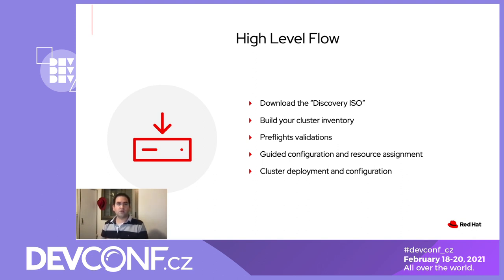Each node that the user wants to be part of the OpenShift cluster needs to boot from that ISO. The agent, which manages the installation locally for a given host, will use a call-home mechanism and start reporting bare-metal inventories such as RAM, disks, and network interfaces. Once the nodes are discovered, pre-flight validations are made, including network connectivity between the nodes, hardware requirements, and so on. The roles are auto-assigned to the hosts based on their capabilities. Note that the user can change the roles, and we'll see that in the demo. During the installation, progress is monitored and reported.